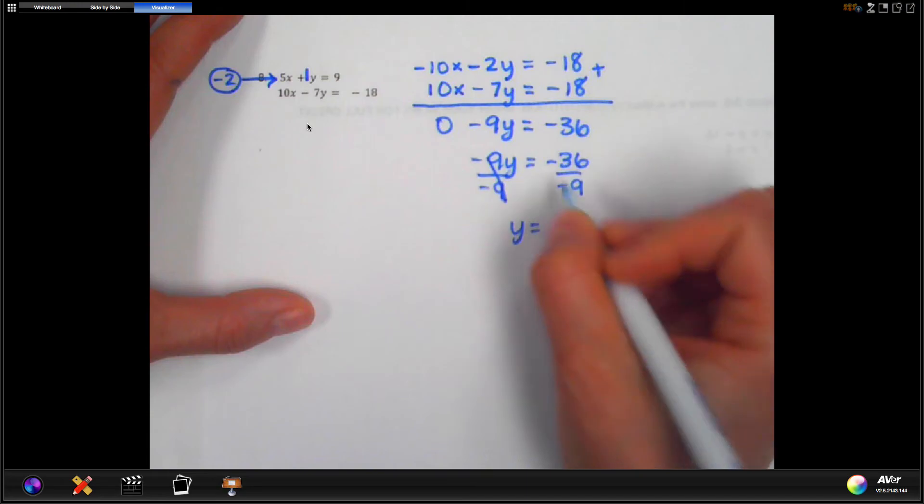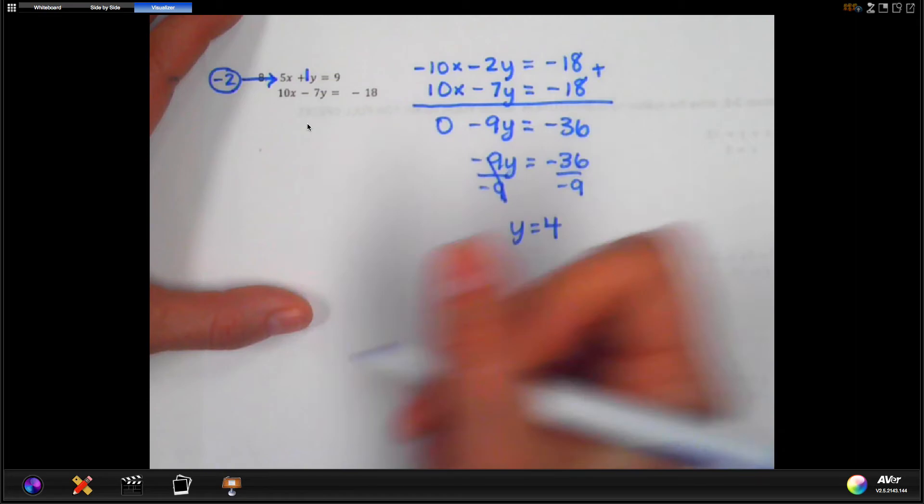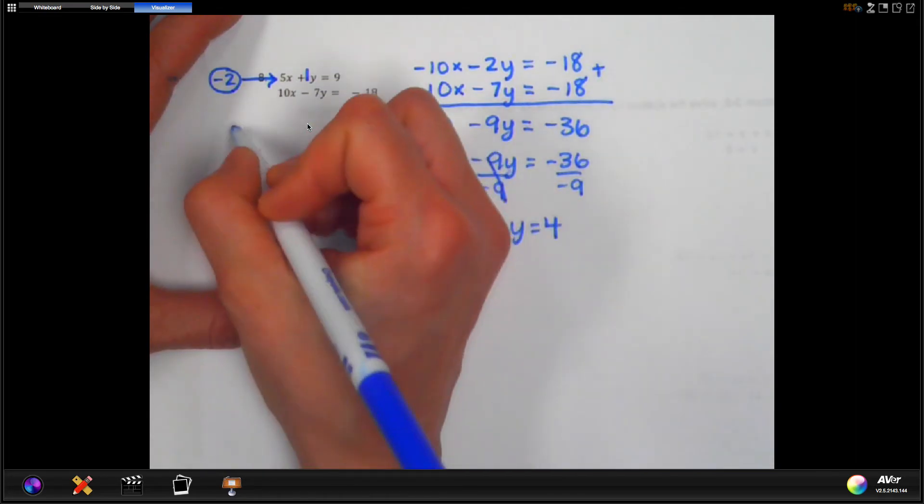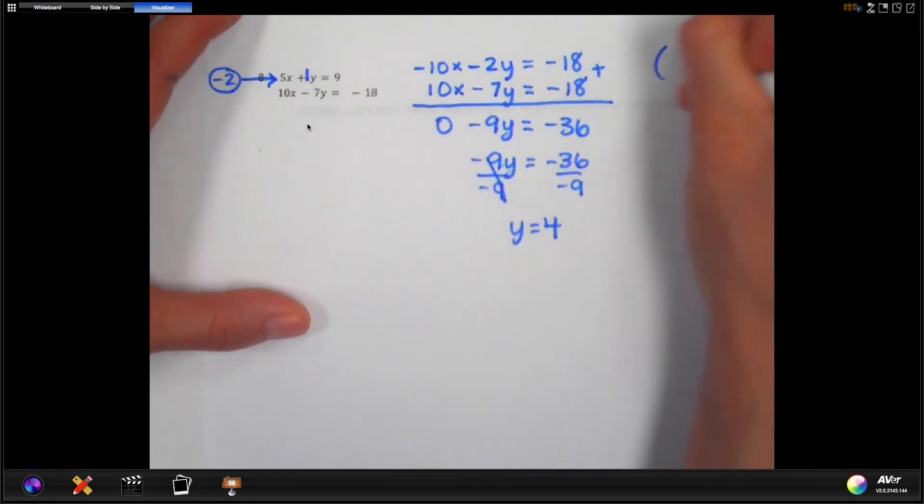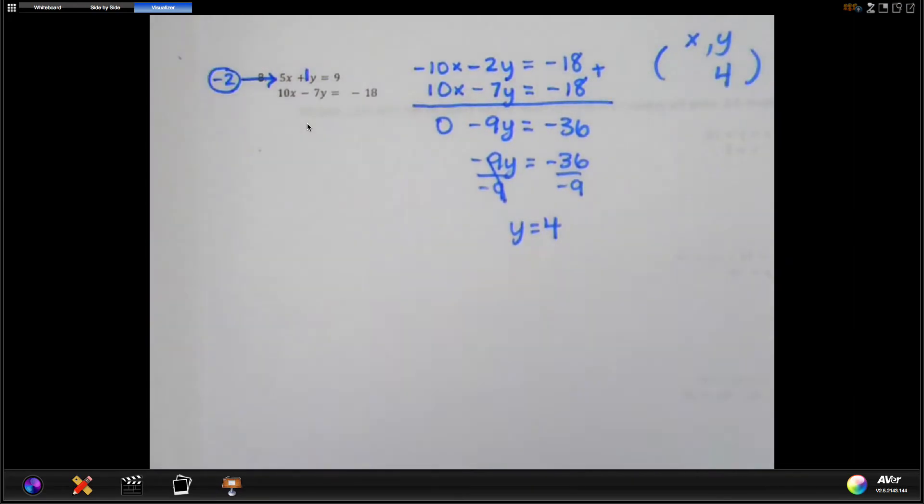Y then equals, remember, negative divided by a negative is going to give us a positive 4. Okay, so on my answer, I'm going to put my answer over here. That is my y value. That's my second value. So y is 4. Okay, now we're going to go back, and you get to choose which equation you're going to use.